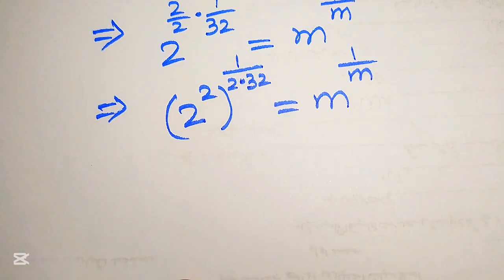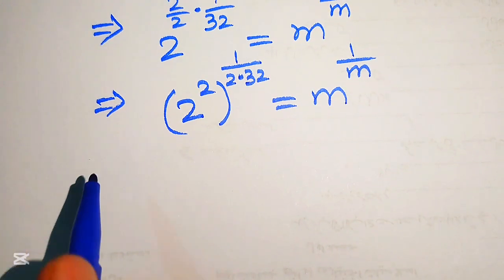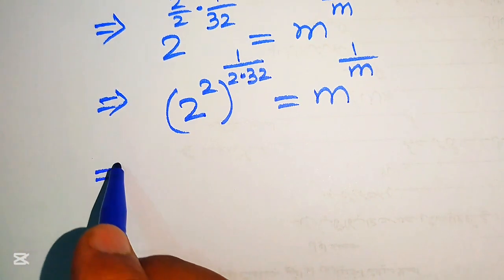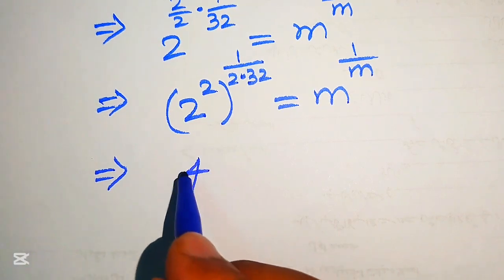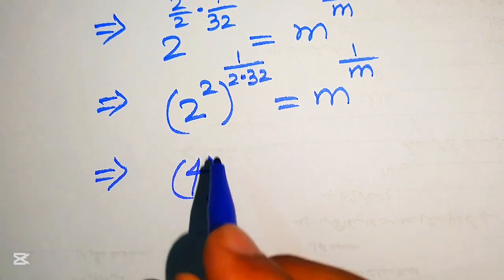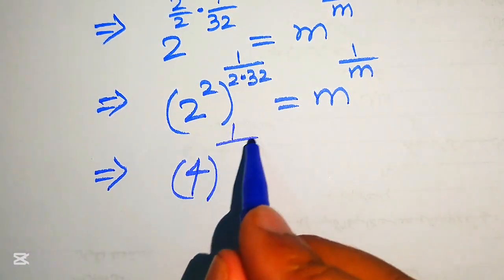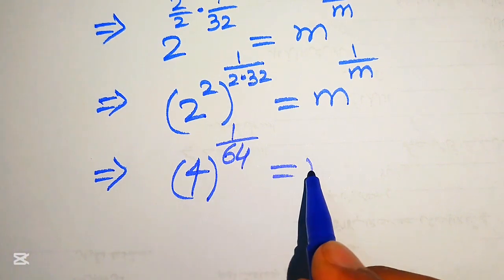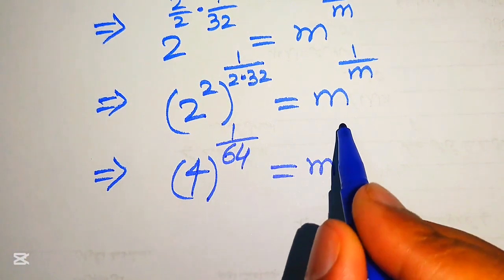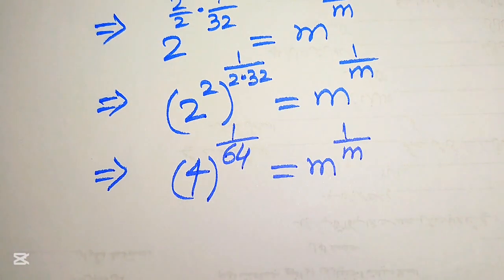In the next step, with some simplification: 2 squared becomes 4, and 2 times 32 equals 64, so we get 4 to the power of 1 over 64 equals to m to the power of 1 over m.